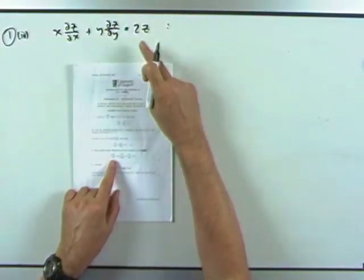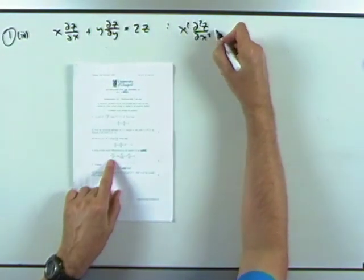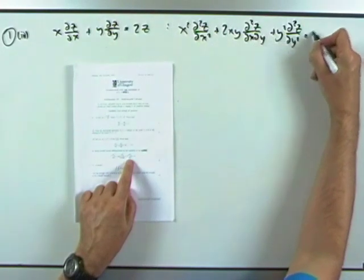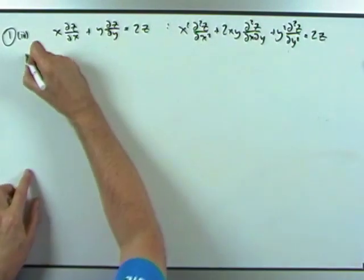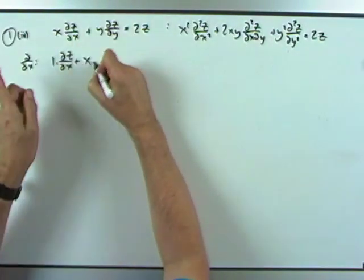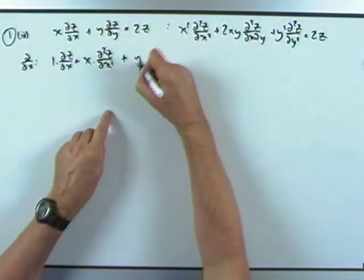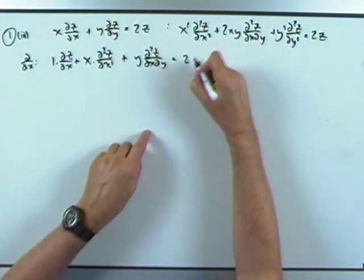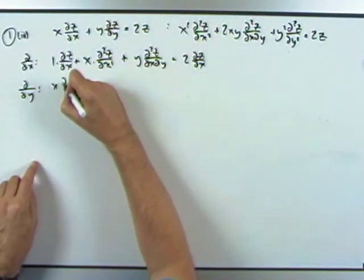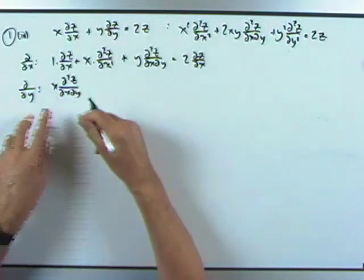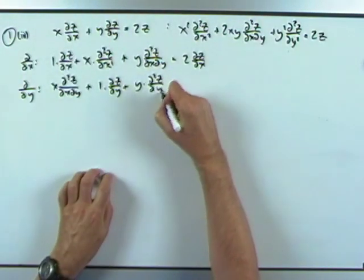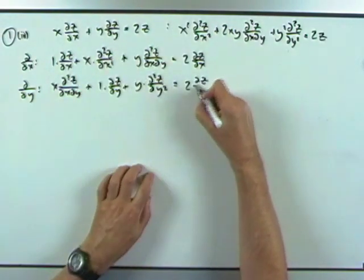For the last part, using the expression already derived, we need to show that x²·∂²z/∂x² plus 2xy·∂²z/∂x∂y plus y²·∂²z/∂y² equals 2z. First, differentiate x·∂z/∂x plus y·∂z/∂y equals 2z with respect to x: by the product rule, partial z by x plus x·∂²z/∂x² plus y·∂²z/∂x∂y equals 2·∂z/∂x. Call this equation 1. Then differentiate with respect to y: x·∂²z/∂x∂y plus partial z by y plus y·∂²z/∂y² equals 2·∂z/∂y. Call this equation 2.